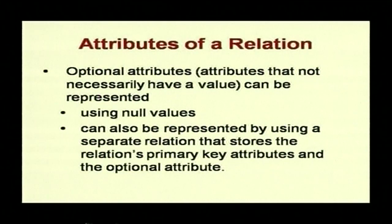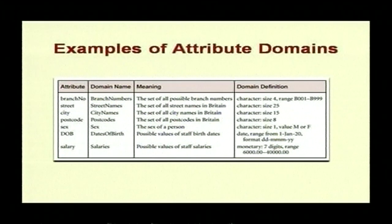If you have multivalued and non-atomic attributes, there are two ways to get around the problem. For optional attributes — attributes that do not necessarily have a value for a particular tuple — you use null values, or you can represent them using a separate relation that stores the relation's primary key attributes and the optional attributes. Essentially, every tuple's attribute must have a value.